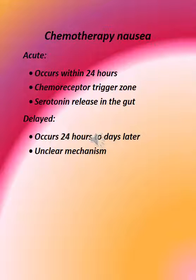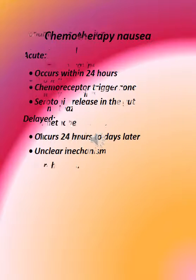Chemotherapy-induced nausea: Acute nausea occurs within 24 hours, involving the chemoreceptor trigger zone and serotonin release in the gut. Delayed nausea occurs 24 hours to days later via an unclear mechanism.